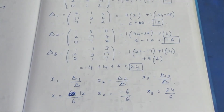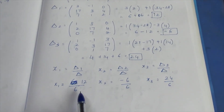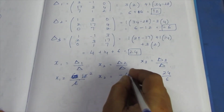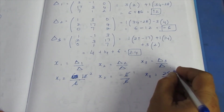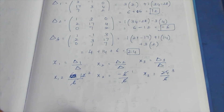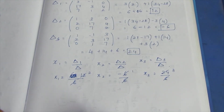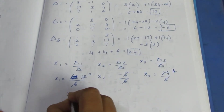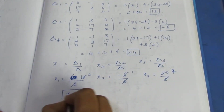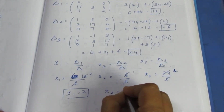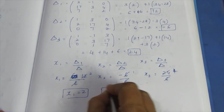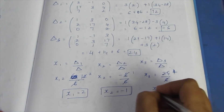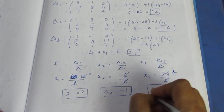For x3, dividing 6 by 6 gives 2, then 12 divided by 6 is 2 for x1. 6 divided by 6 is 1, and 24 divided by 6 is 4. So x1 equals 2, x2 equals minus 1, x3 equals 4.